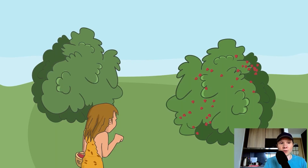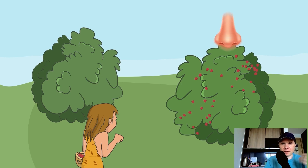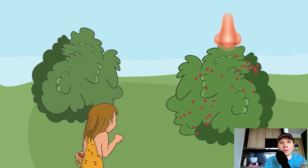Now we have two bushes left. They have about the same interaction cost — which one would you choose? Probably the one on the right, because it smells like and looks like it has more berries, more potential value. That smell of value is called information scent — how valuable a product or design smells to us based on our current goal, which is changeable.